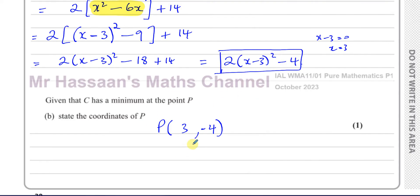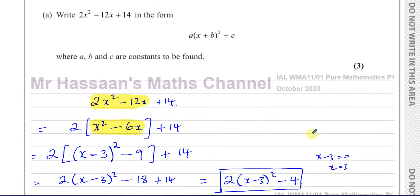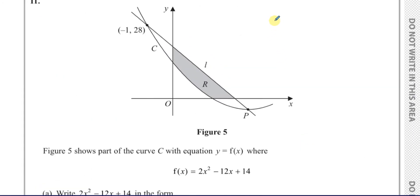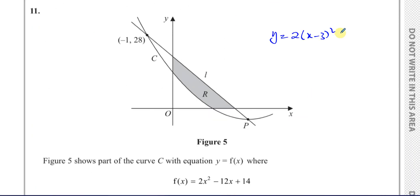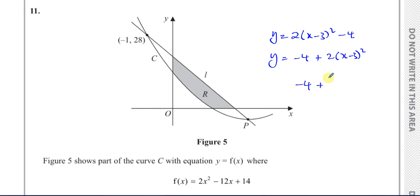You don't have to show many steps — you can just write it down from the completed-square form. To explain why this is the minimum: if y = 2(x minus 3)² minus 4, we can rewrite it as minus 4 plus 2(x minus 3)². You're always going to have minus 4 plus 2 times something squared. When you square something it's always positive, so you're always adding something to minus 4 — even if x is a very large or very small number.